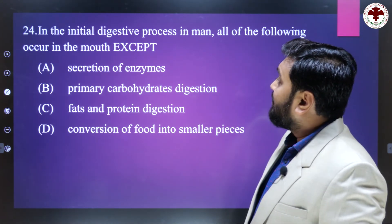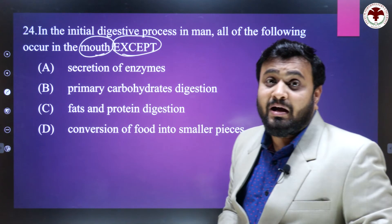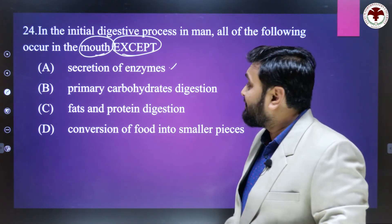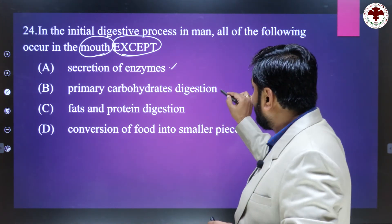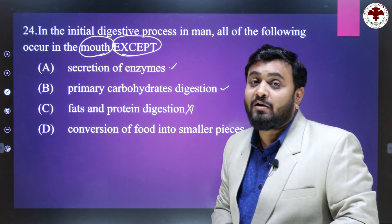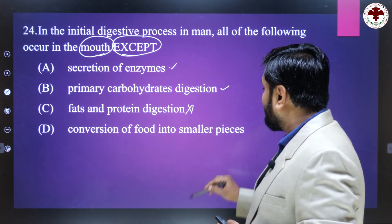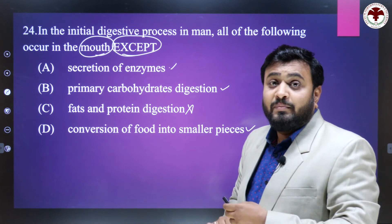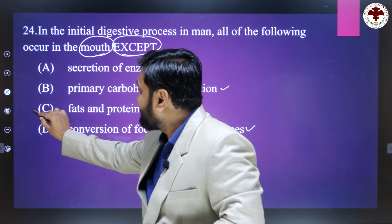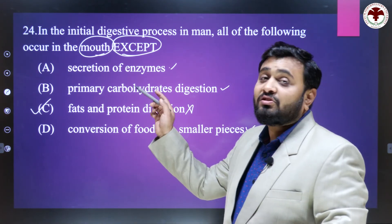In the initial digestive process in humans, all of the following occur in the mouth except? Secretion of enzymes — yes, occurs in the mouth. Primary carbohydrate digestion — yes, starch digestion starts in the mouth. Fats and protein digestion — no, this is wrong; fat and protein digestion do not occur in the mouth. Conversion of food into smaller pieces — yes, teeth do this. So the right answer is C — fats and protein digestion do not occur in the mouth. Protein digestion starts in the stomach and fat digestion occurs in the small intestine.